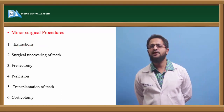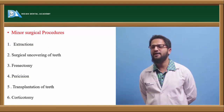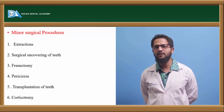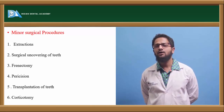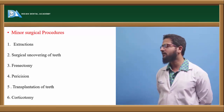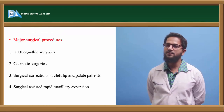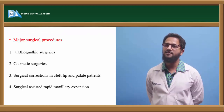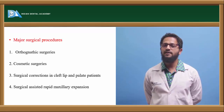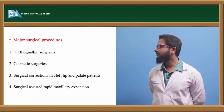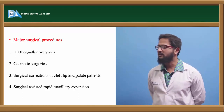Various types of minor surgical procedures include extractions, surgical uncovering of teeth, frenectomy, pericision, corticotomies, and transplantation of teeth. Whereas major surgical procedures include orthognathic surgeries, surgical repair of cleft lip and palate, surgically assisted rapid maxillary expansion, and cosmetic surgeries.